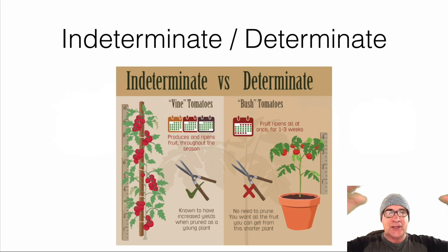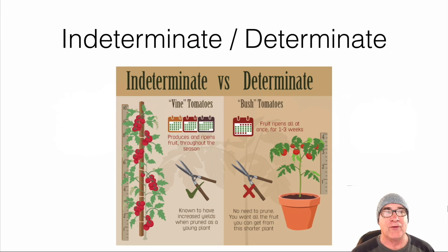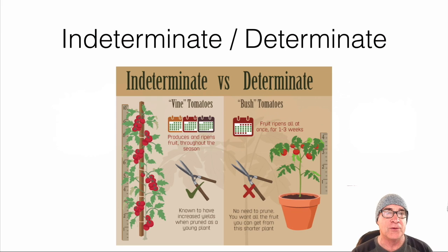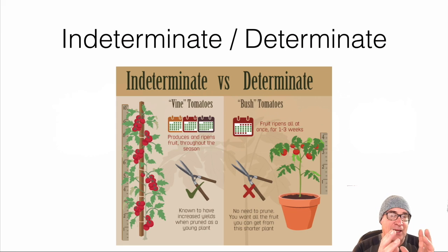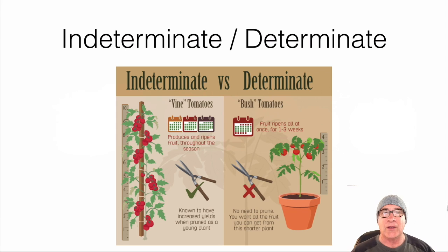Determinate tomatoes are called bush tomatoes. There's a gene that stops growth — the terminal buds and lateral buds all stop at a certain point. All of the fruit ripens in about one to four weeks, giving everything it has in a short time, so you don't want to prune it. Flavor is actually produced in the leaves and passed on to the fruit, so the more leaves you have, the more sugars you'll have — we call those brix. Vine tomatoes tend to have about seven to ten percent brix, meaning they're fairly sweet. Determinate tomatoes tend to have four to six percent brix, so they're not quite as flavorful — they may be juicy, but sometimes lack in flavor.